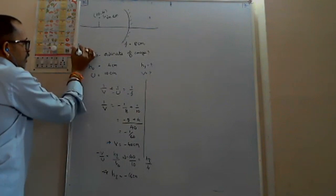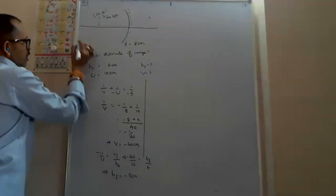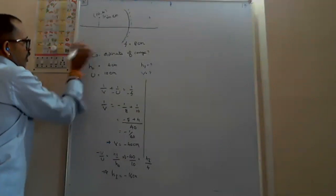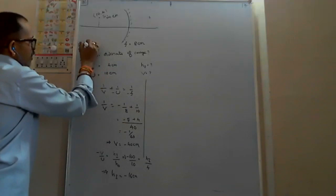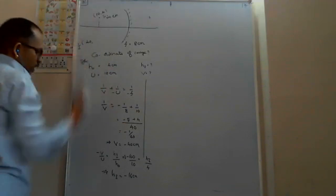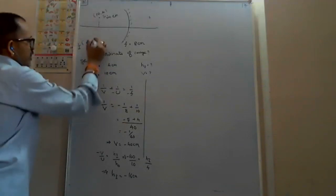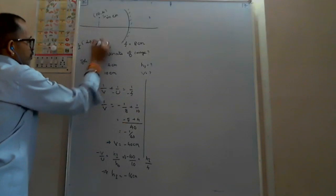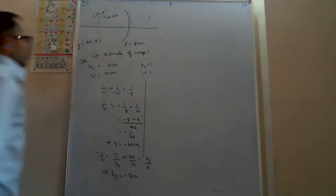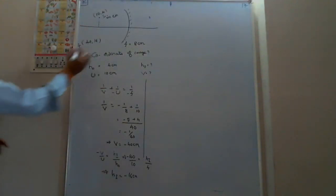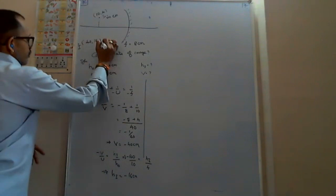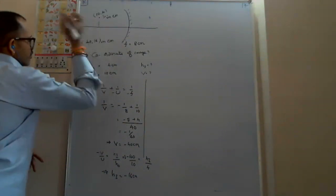So somewhere here the image will be formed. This is the position of image. The coordinates will be 40 for x-coordinate and minus 16 — wait, the y-coordinate will be 16 — in centimeters. Both are in centimeters.